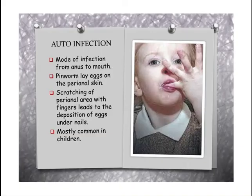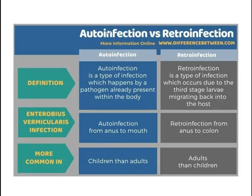Comparing the two modes: in auto-infection the pathogen already present in the body re-infects via the anus-to-mouth route. In retro-infection, third-stage larvae migrate back into the host via the anus-to-colon route. Auto-infection is more common in children, whereas retro-infection is more common in adults.